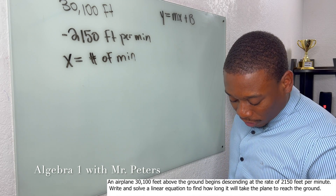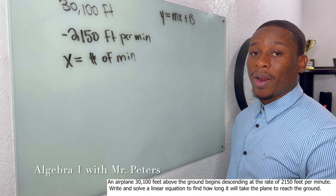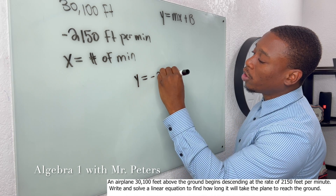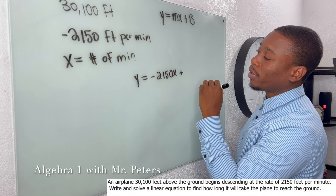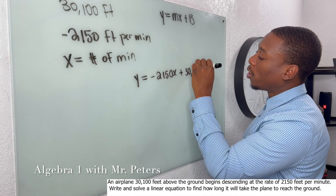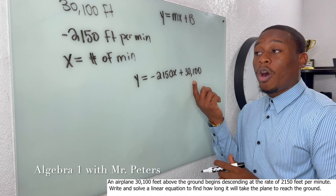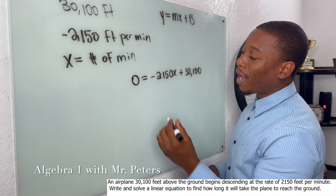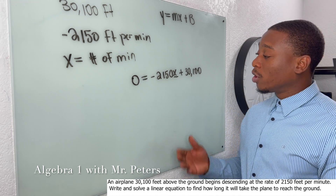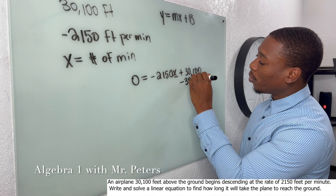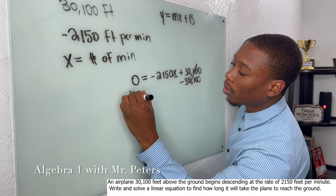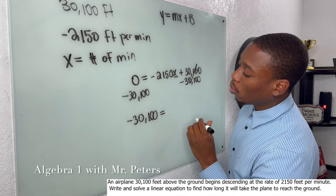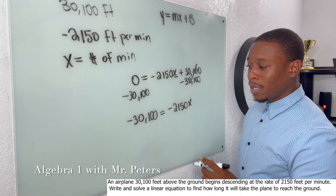The problem asks us to write and solve an equation for how long it will take the plane to reach the ground. Our equation is y = −2150x + 30100. The 30,100 is our b because we're already in the air. To reach the ground, y = 0, and we're solving for x. I subtract 30,100 from both sides to get −30100 = −2150x.